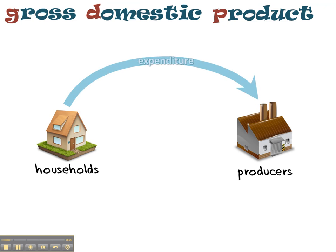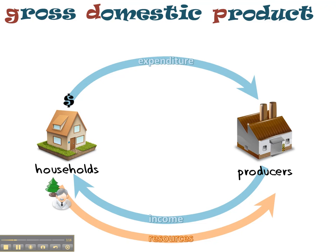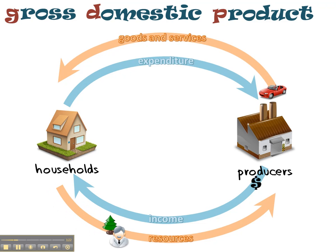For instance, households spend the money they earn on goods and services, so their spending is one of the flows going between the two sectors. In exchange for expenditure, firms pay households income, which households then spend with the producers. Those are the money flows, and they're going on all the time through the year. In exchange for those money flows, we have two real flows. In exchange for income, which producers pay to households, households provide resources to producers, which they use to produce goods and services. Goods and services are then provided by producers to households in exchange for consumer spending.